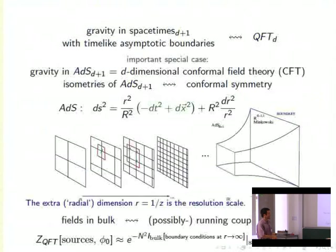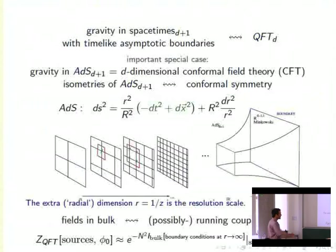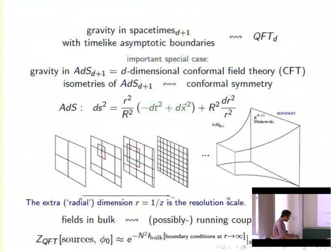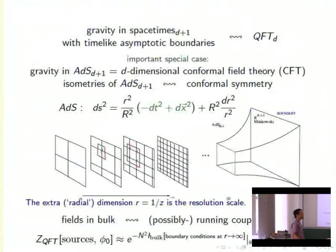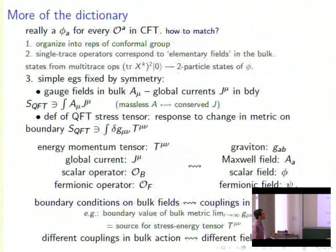This slide is a recapitulation: fields in the bulk correspond to coupling constants in the field theory, and their evolution in the radial direction corresponds to RG flow. What we should compute: to get the field theory partition function, solve the bulk equations of motion with specified boundary conditions. I need to tell you a little more about the dictionary. There's a field for every operator in the field theory; we organize them into representations of the conformal group.